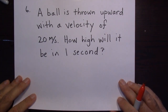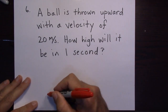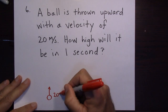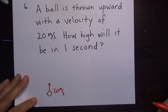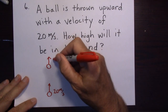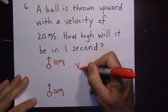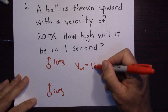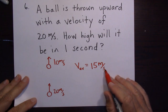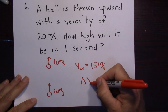Problem six: a ball is thrown upward with a velocity of 20 meters per second. How high will it be in one second? After one second, it loses 10 m/s and is going only 10 meters per second. The average velocity is 15 meters per second. Over one second, delta X equals 15 meters upward.